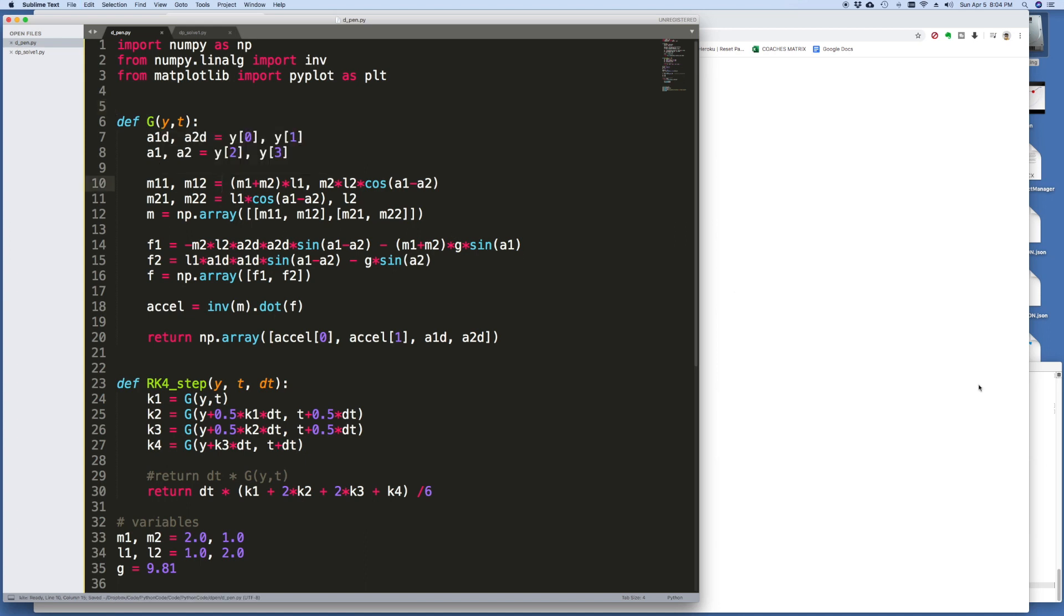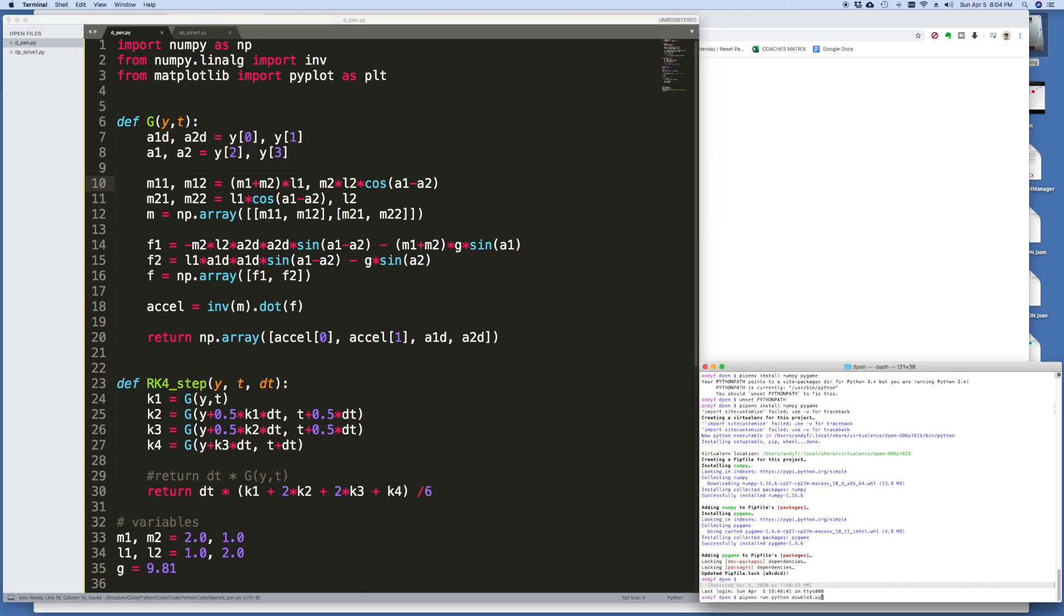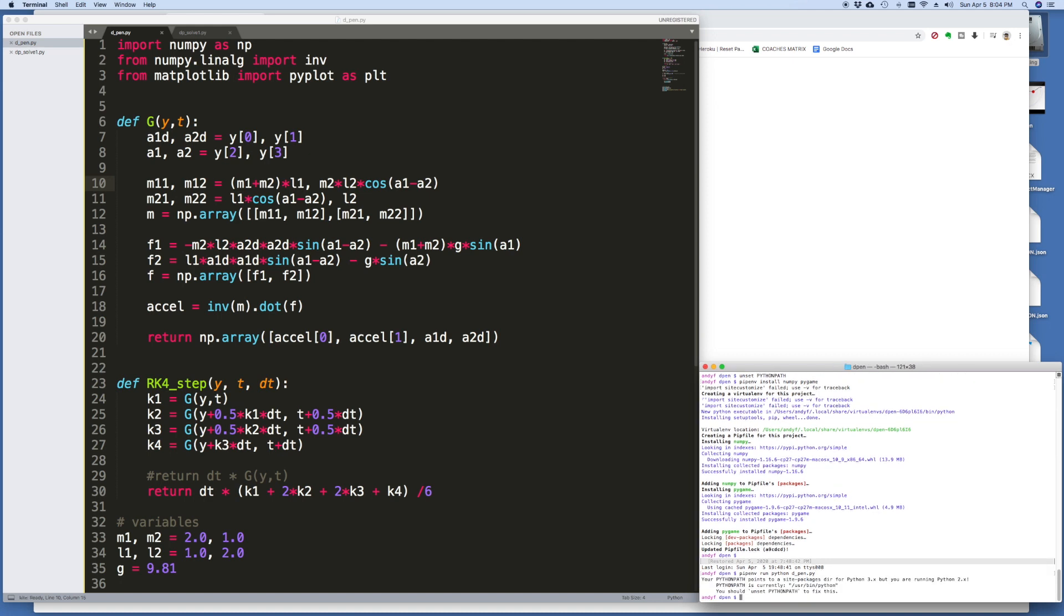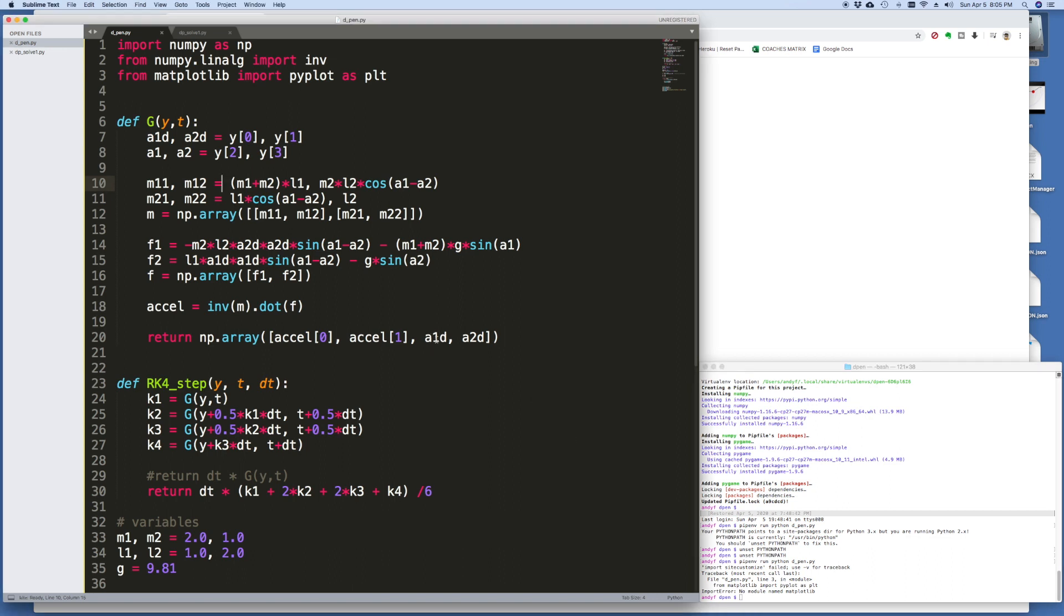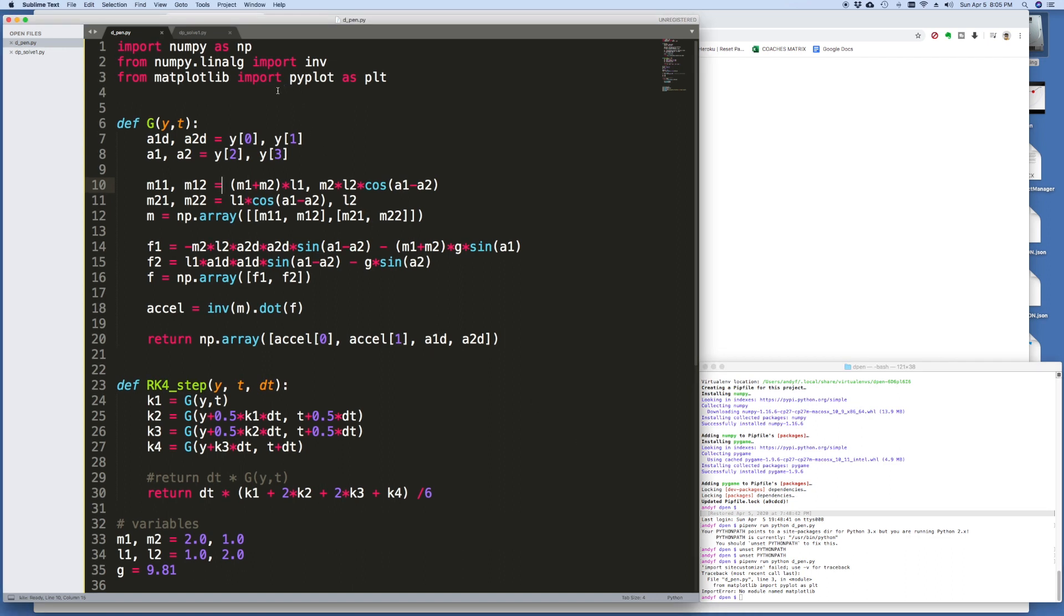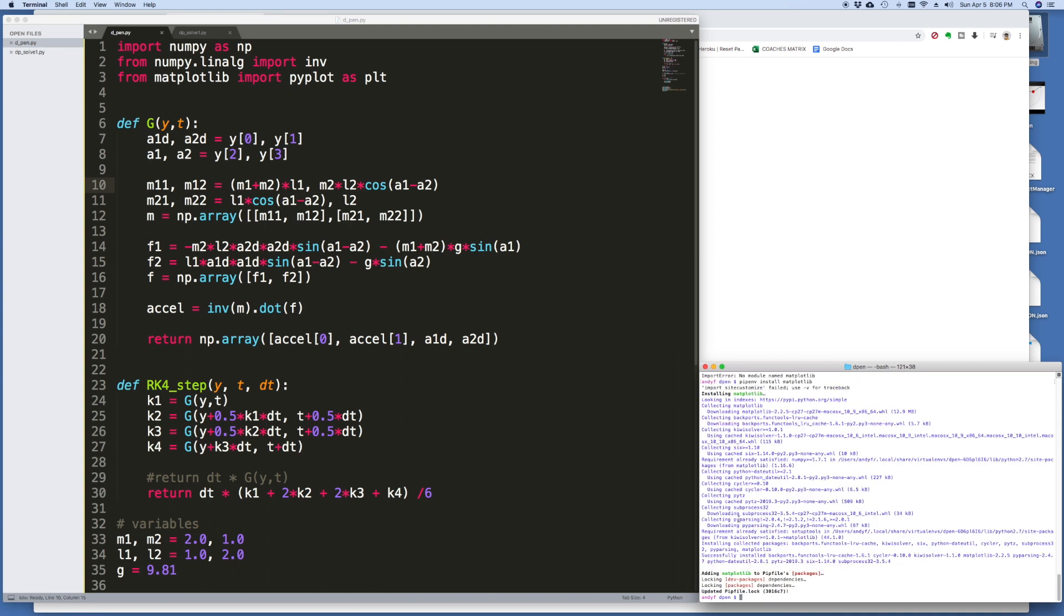Now it should just be a question of running it. In order to do that, I'm going to go run dpen.py. Let's see if we got it bug-free. Module name matplotlib. Oh, I need to install matplotlib, so pip install matplotlib. Okay, we're back and it's installed.